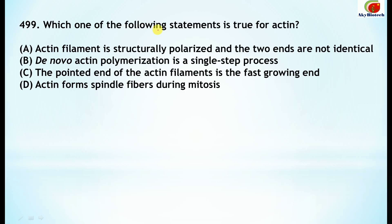Next question 499: Which one of the following statements is true for actin? You have to pick up the correct statement. The correct answer is: actin filament is structurally polarized and the two ends are not identical. Option A is the correct option.